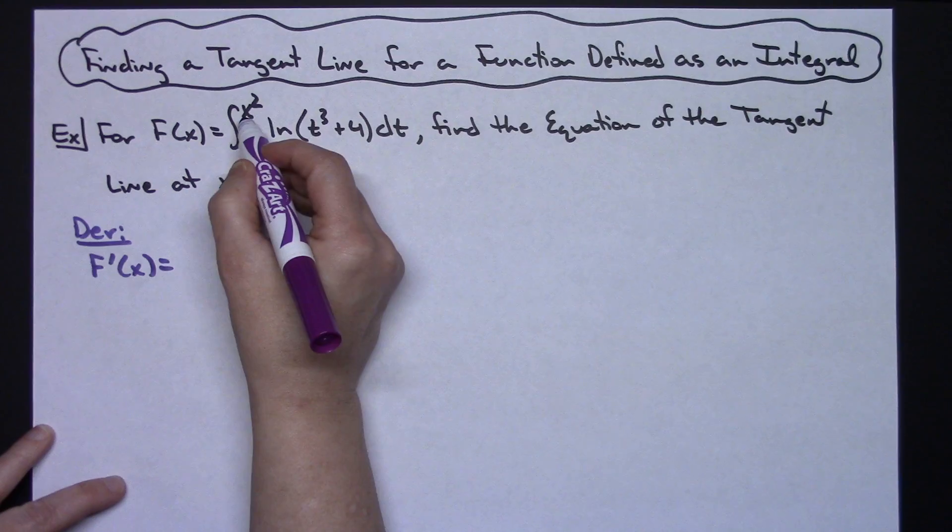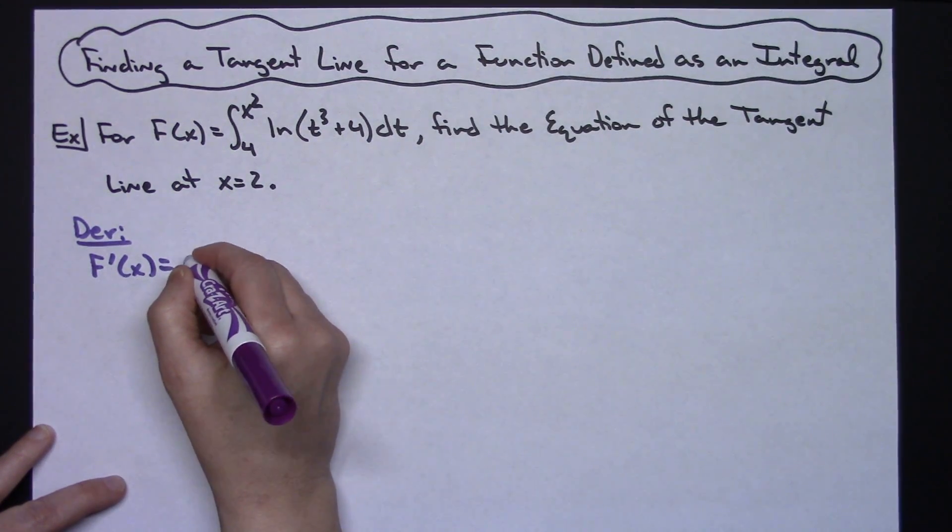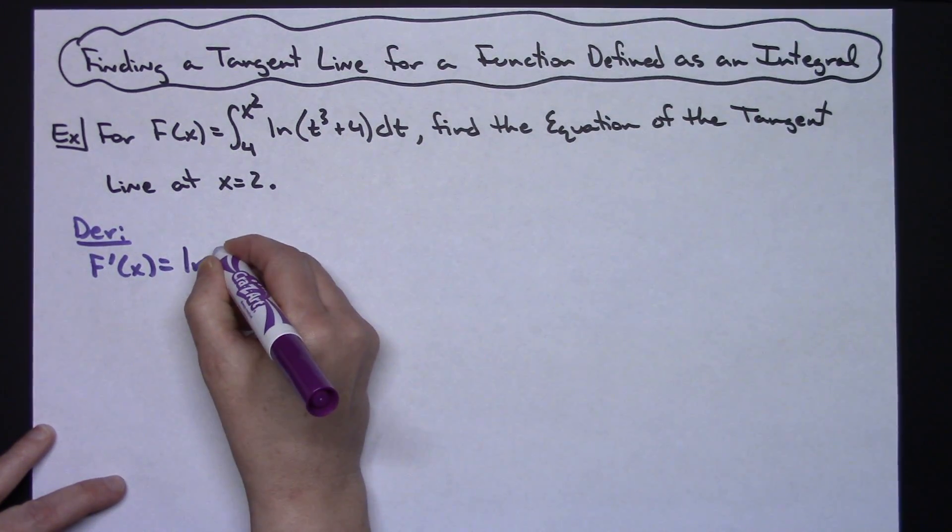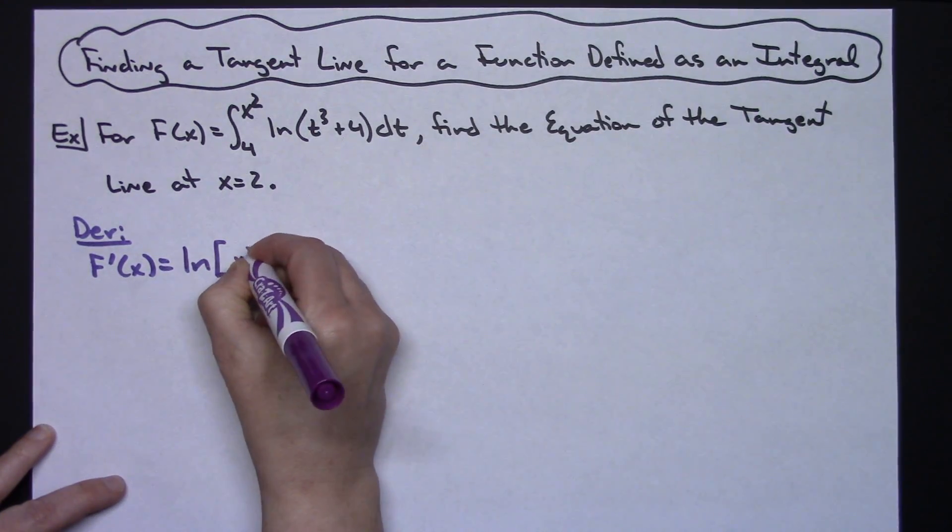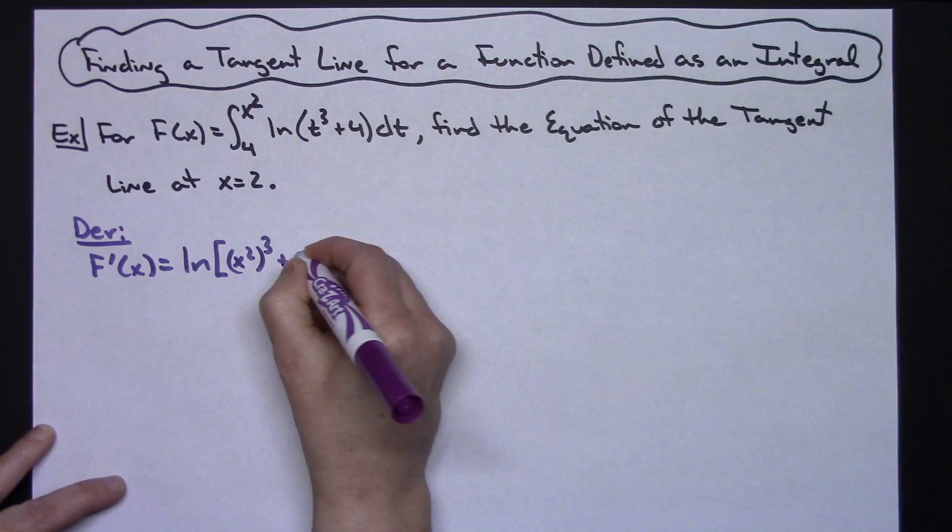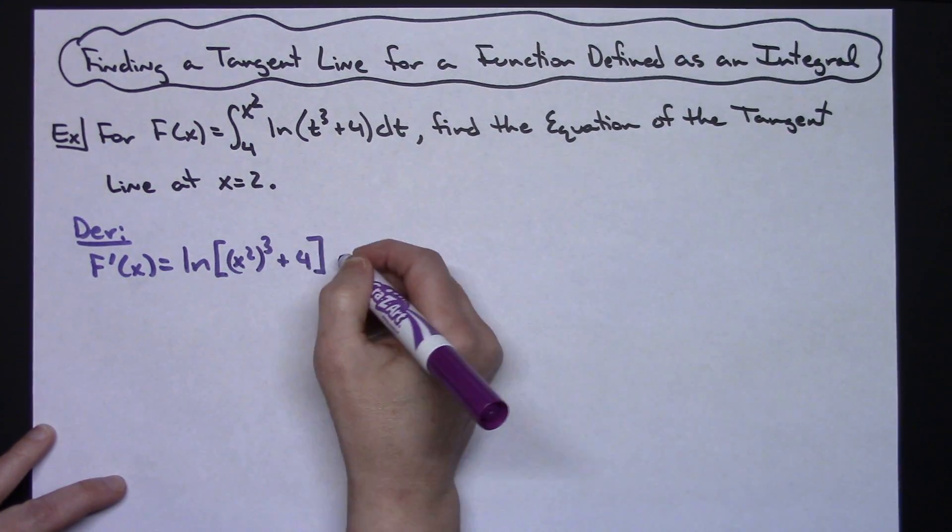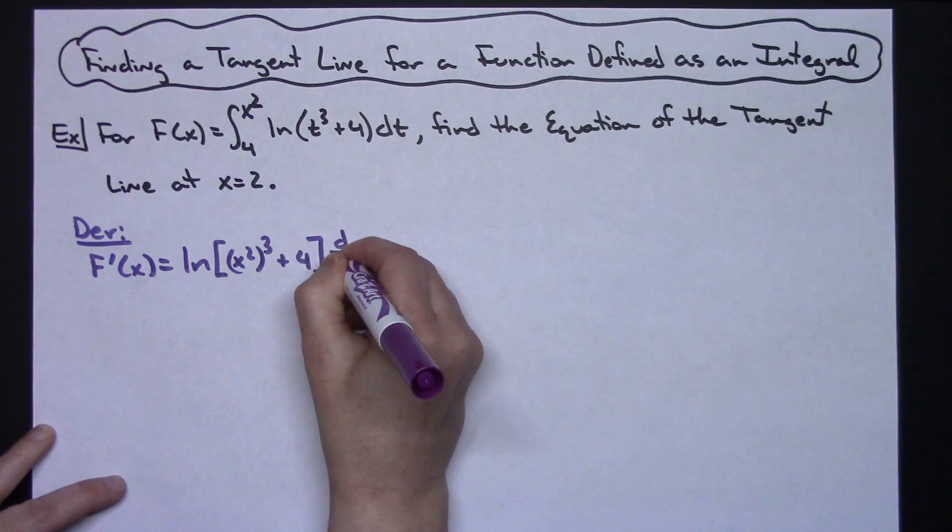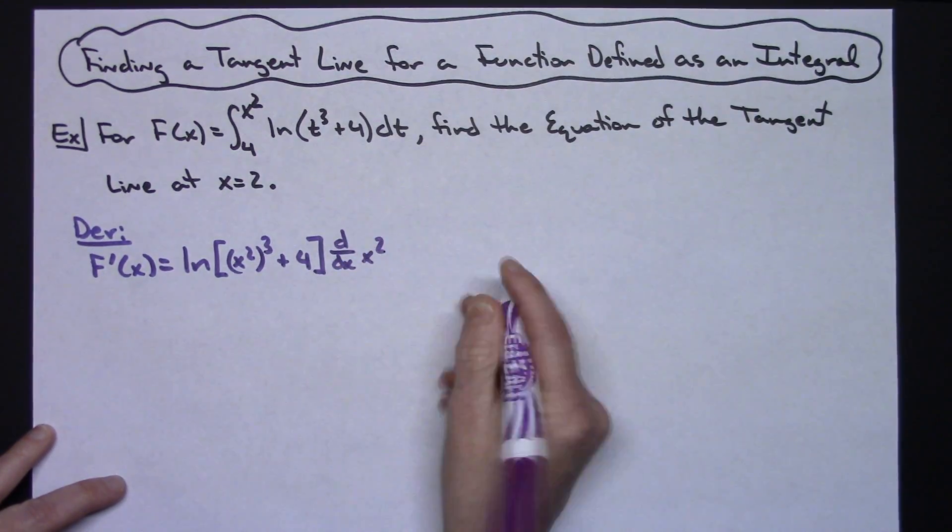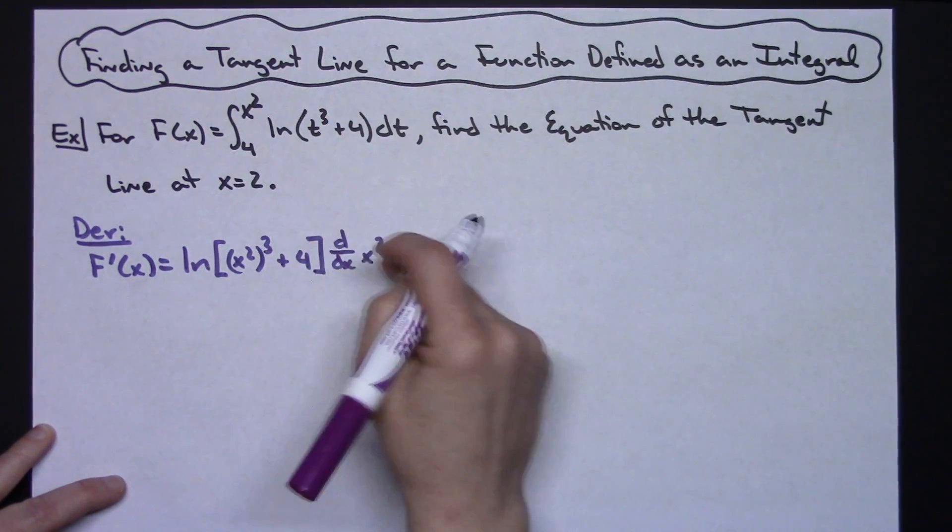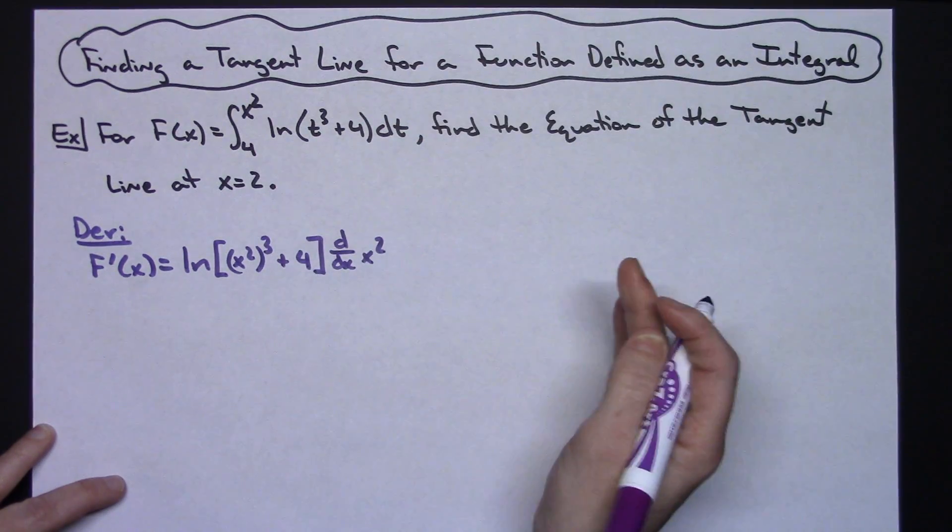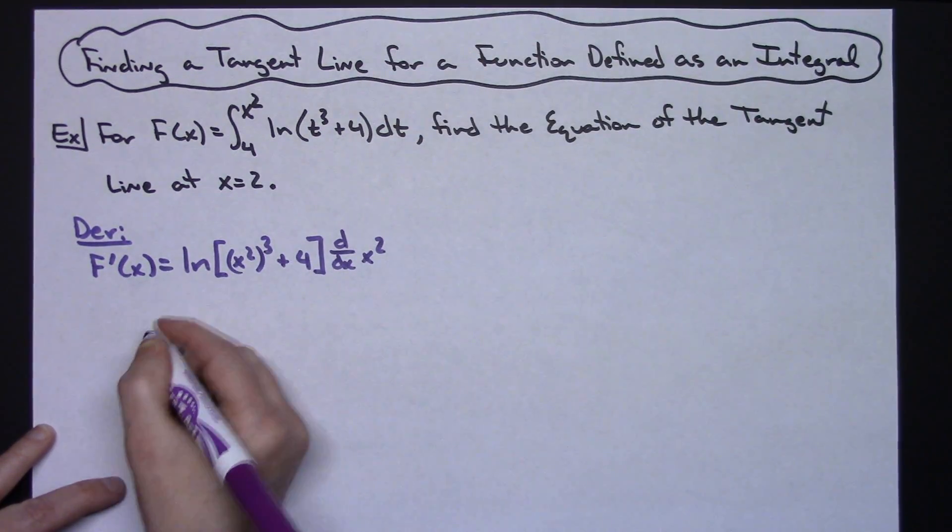So for the part that we do, plugging that in, I'm going to have the natural log of x squared to the third power plus 4, and then times the derivative d/dx of the x squared. And like I said, minus plugging 4 in times the derivative of 4, which is going to be 0, so everything else is going to fall out there.